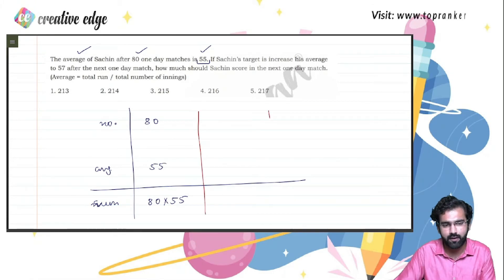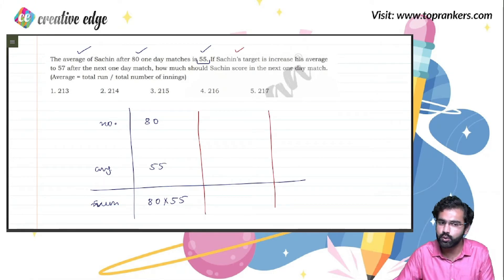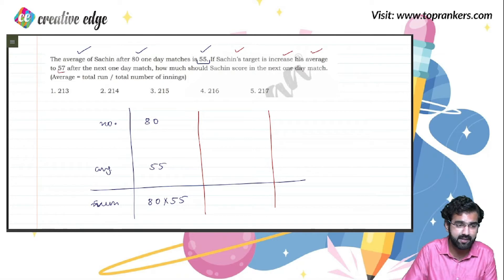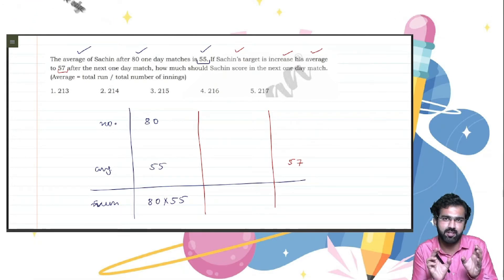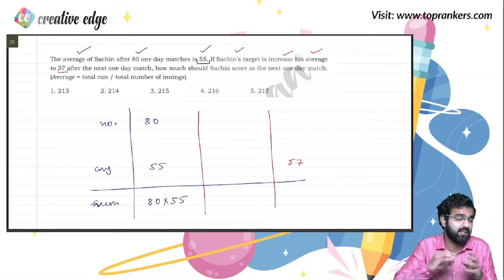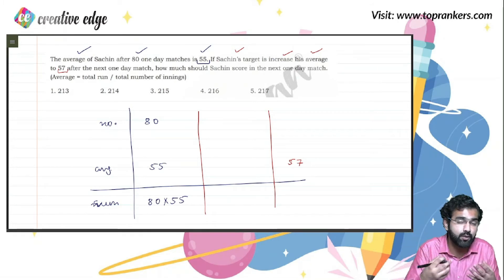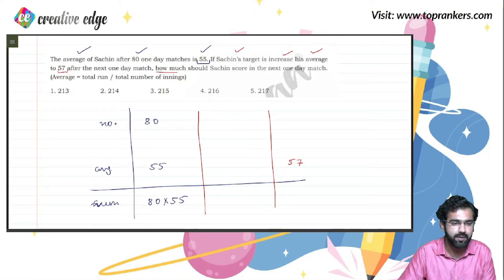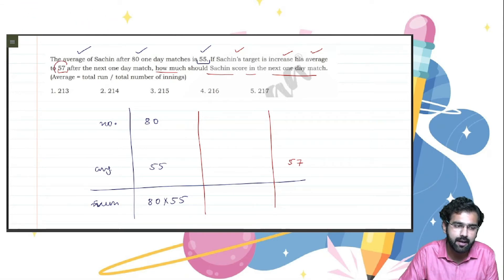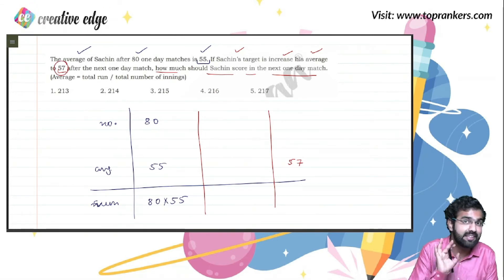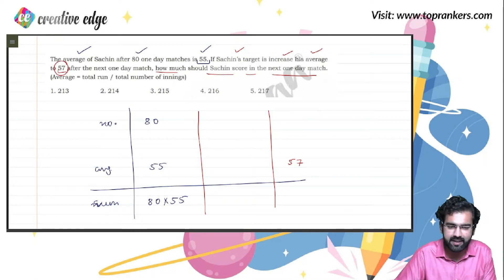What happens in the next match? Sachin's target is to increase his average to 57 — that means he wants to increase his average by 2 runs. How many runs should Sachin score in the 81st one-day match so that he can take his average to 57, considering all 81 innings? In 81 innings, the new average should be 57.